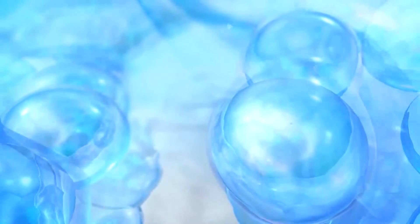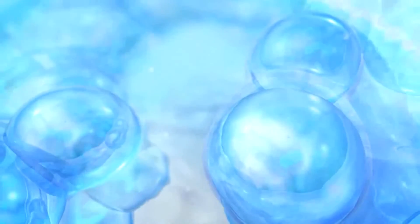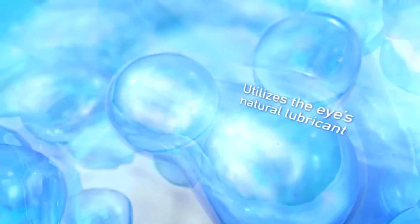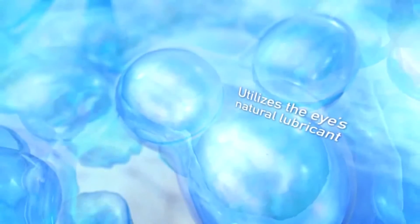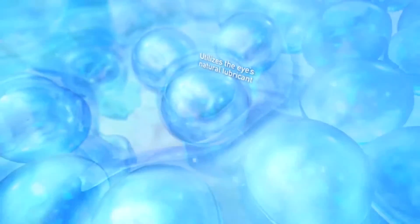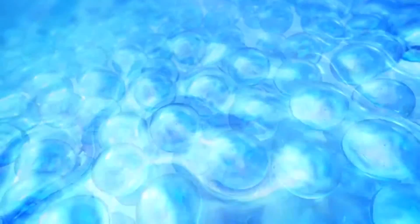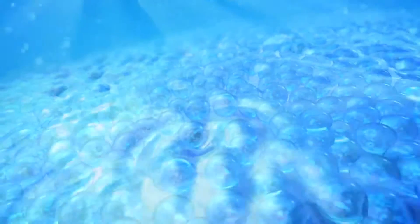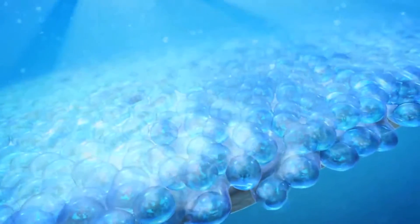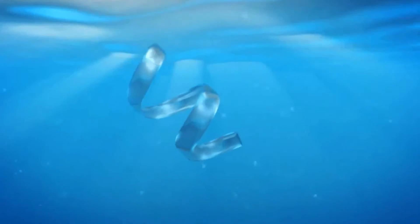To help hydrate lenses, BioTrue utilizes hyaluronan, the eye's natural lubricant. BioTrue forms a free-flowing network on the lens surface, drawing in water to envelop lenses in a hydrating cushion.